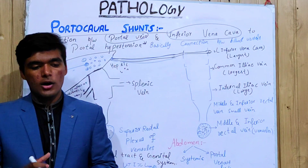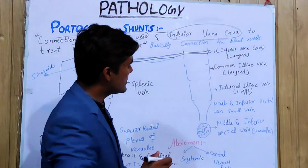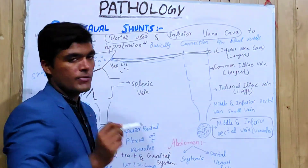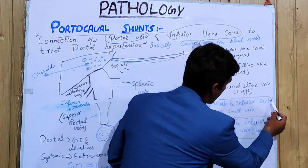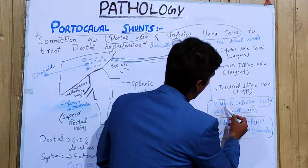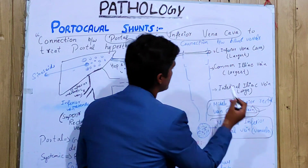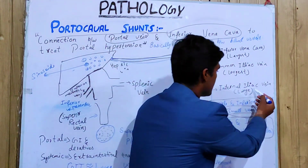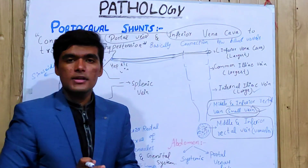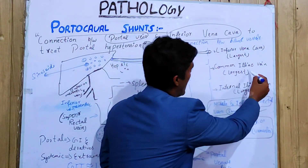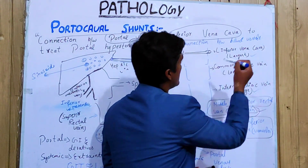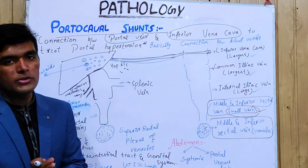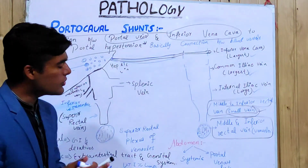Looking at the systemic system: it starts from venules, then we have the middle and inferior rectal veins as small veins, then the internal iliac vein which is larger, then the common iliac vein which is even larger, and after that we have the inferior vena cava, which is the largest.